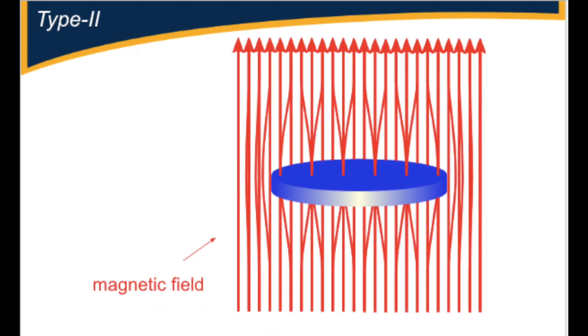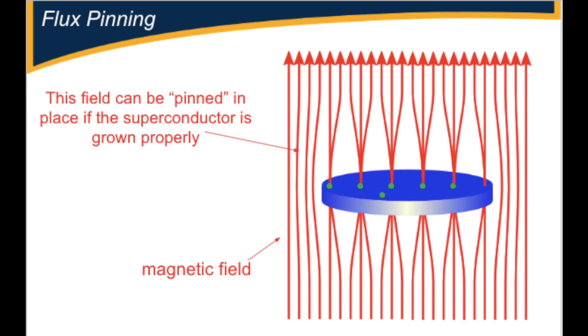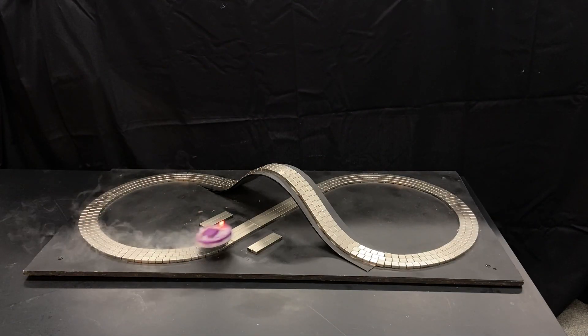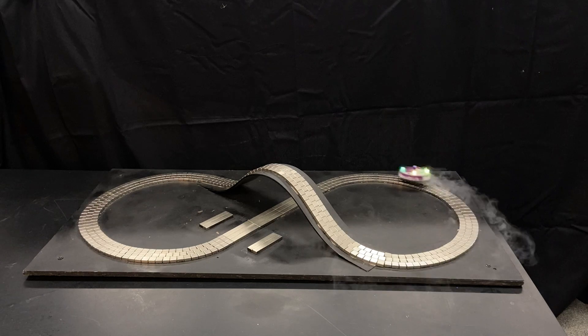The levitating puck here has a type 2 superconductor inside it. These show some diamagnetism and can levitate, but they also expel some magnetic field and allow certain amounts of it to penetrate through their bulk. Our superconductor has a circulating supercurrent around a normal core, which allows it to capture or pin the magnetic field in place. This is what keeps the superconductor attached to the track as it levitates, and it can even suspend underneath the track.